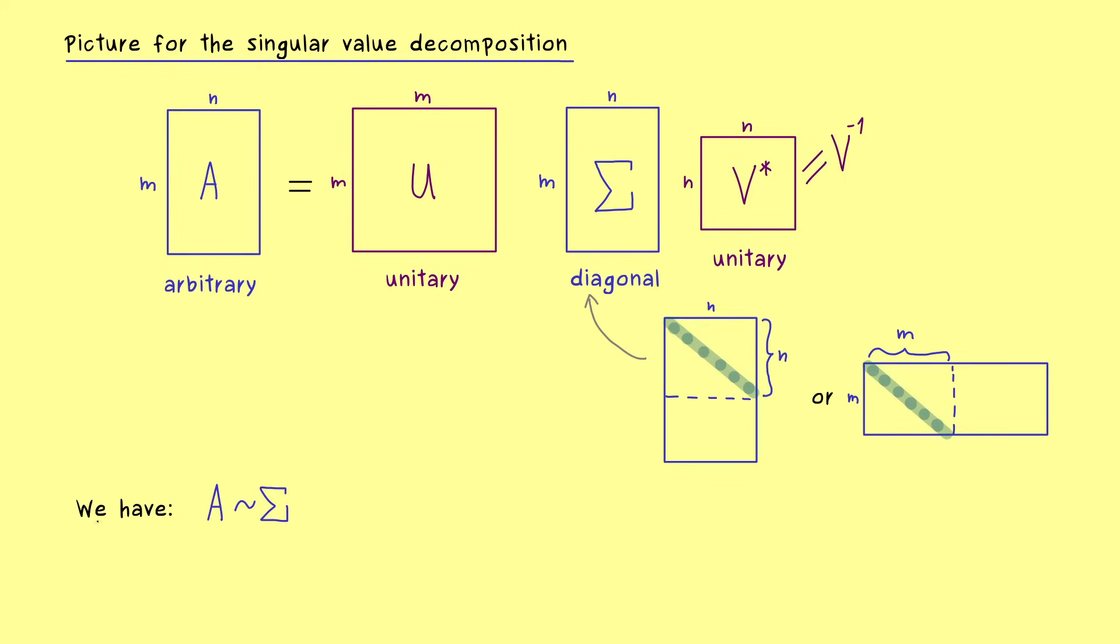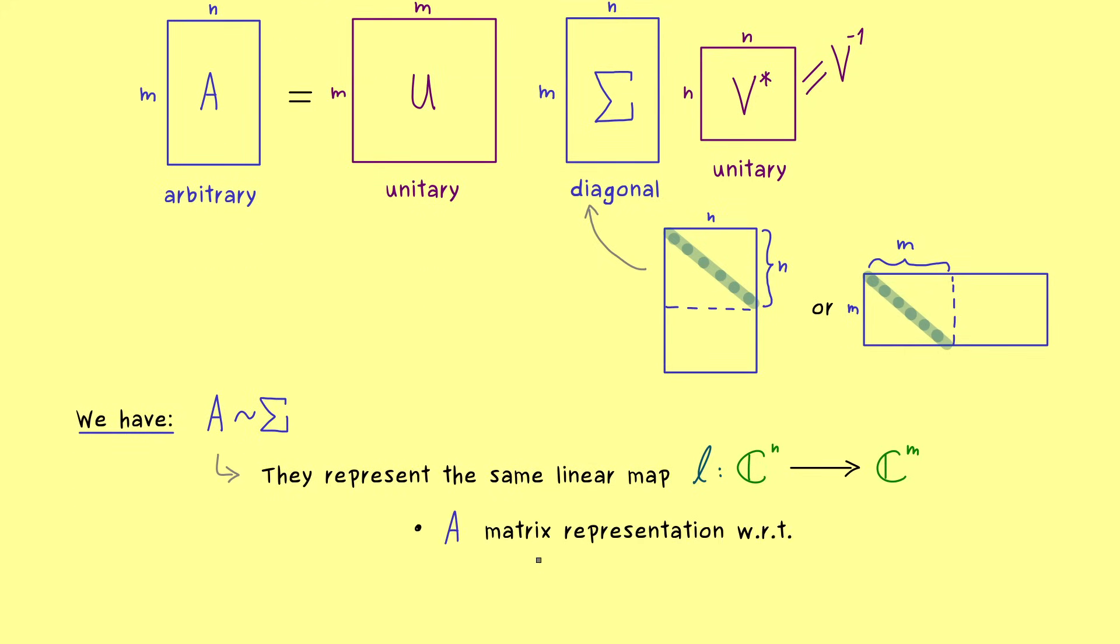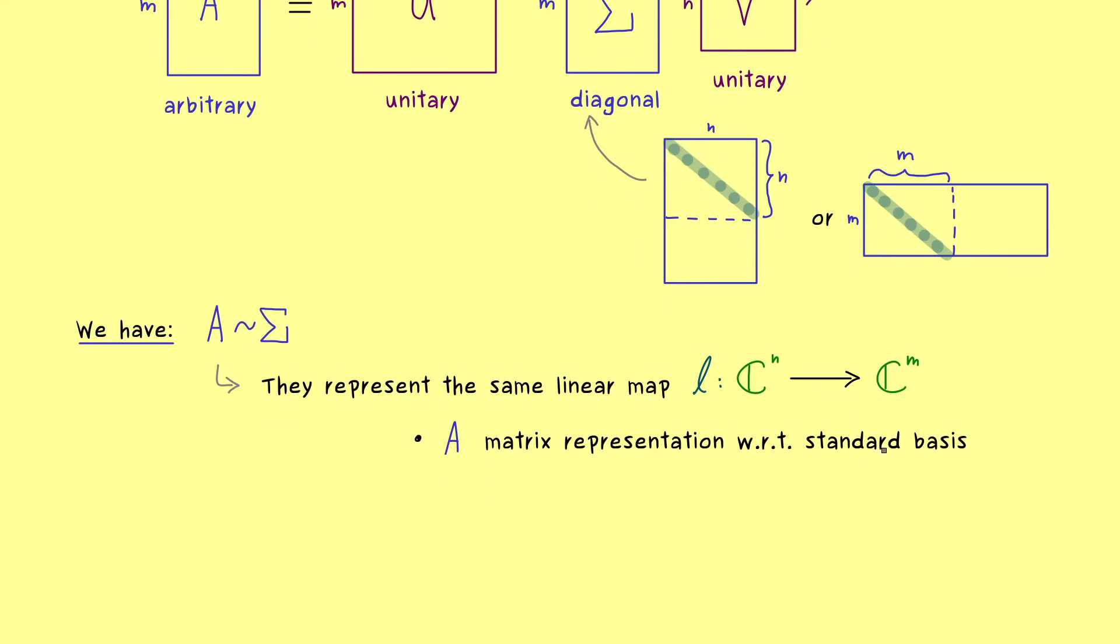So this implies that both matrices represent the same abstract linear map, just with respect to different bases. So we could say our abstract linear map is L and it goes from C^n into C^m. We already know that. The columns give us the input space and the rows the output space. And now we can just state that A is the matrix representation of L with respect to the standard basis. And please note, here we have one standard basis in C^n and another one in C^m.